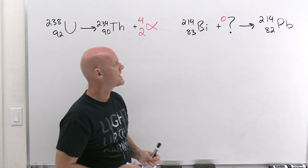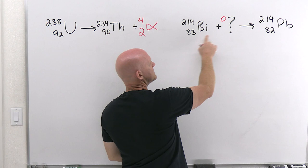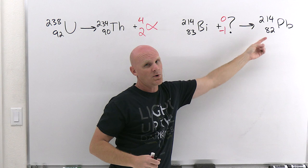And then finally, 83 plus what gives a total of 82? Well, 83 plus negative one. And 83 and negative one adds up to a total of 82, and there it is.